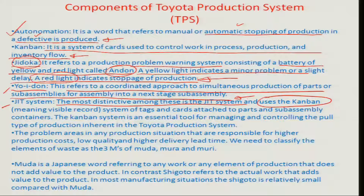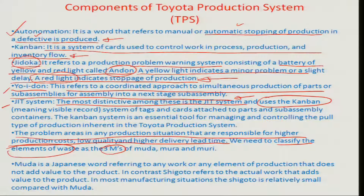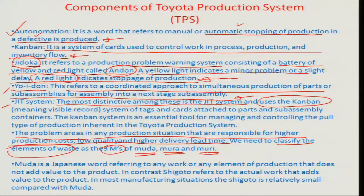The problem areas in any production situation that are responsible for higher production cost, low quality, and high delivery lead time are classified as wastes in the Toyota Production System. These elements of waste are called the three M's — Japanese terms used in the Japanese manufacturing system. The first M is Muda, the second is Mura, and the third is Muri, and each has a specific meaning.